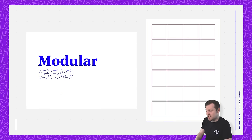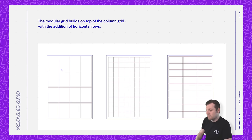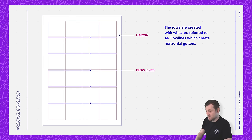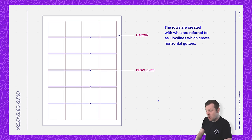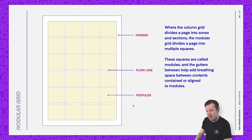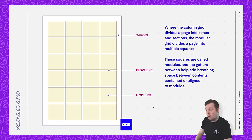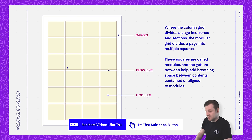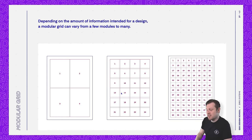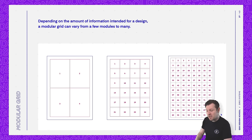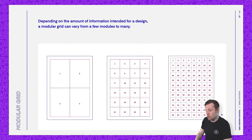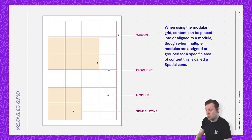Another common grid used in design is the modular grid. The modular grid builds on top of the column grid with the addition of horizontal rows. The rows are created with what are referred to as flow lines, which create horizontal gutters. Where the column grid divides a page into zones and sections, the modular grid divides a page into multiple squares or rectangles called modules, and the gutters between help add breathing space between contents.